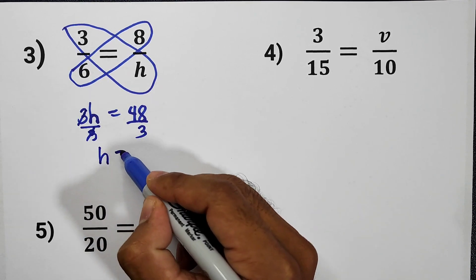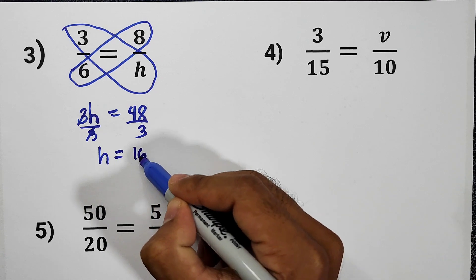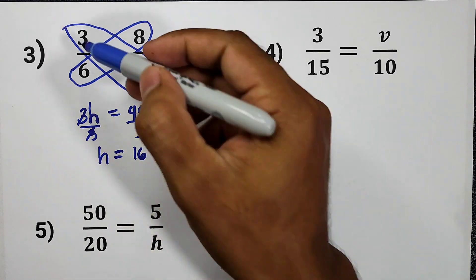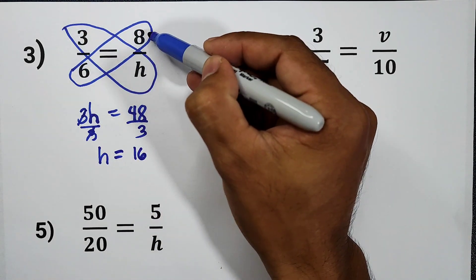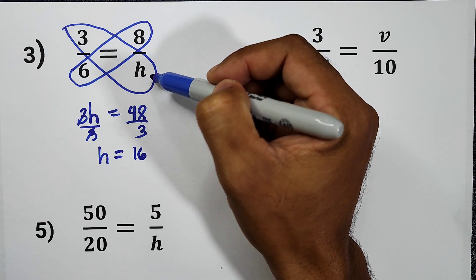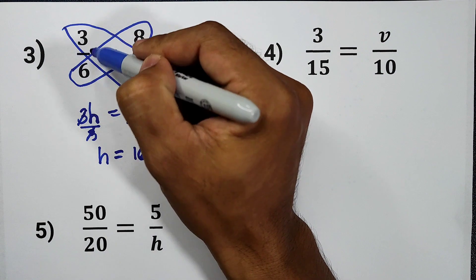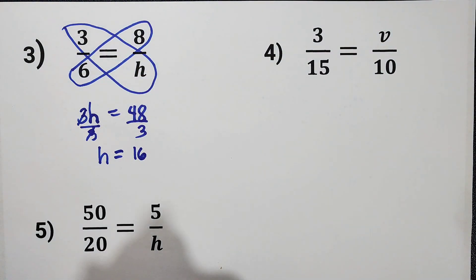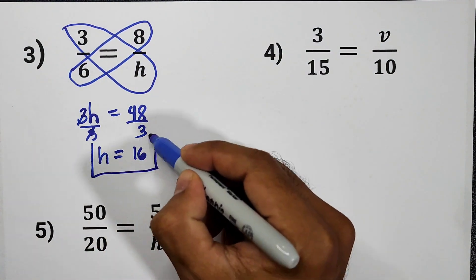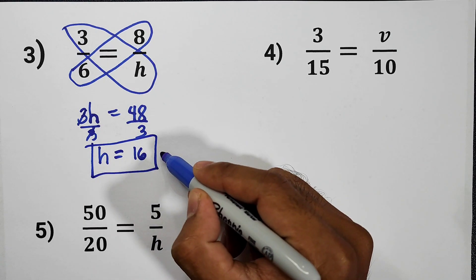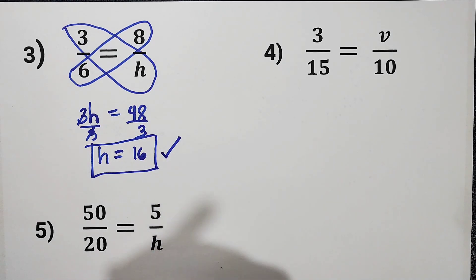Cancel. So now, H is equal to 16. Let us check. 3 over 6 is equal to 8 over 16. 8 over 16, that is 1 half. 3 over 6 is also 1 half. Therefore, H is equal to 16 is our final answer.